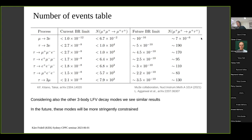Despite this, there are two compelling reasons to still pursue Mu-Tristan results. First, we might be wrong about the assumed relation between operators — if we don't see mu to 3e but do see something at Mu-Tristan, that would reveal our assumptions were incorrect. Second, if mu to 3e does show a signal, Mu-Tristan is highly motivated as it can probe the same physics in a different and complementary way, and can access more flavor final states than mu to 3e alone.